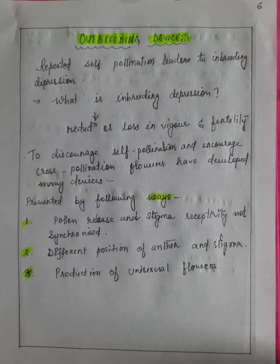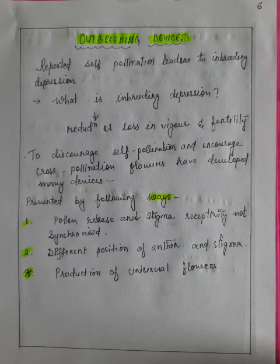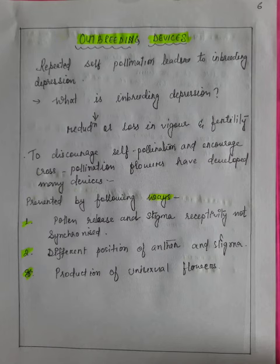This is called outbreeding devices. Due to repeated self-pollination, it leads to inbreeding depression. Inbreeding depression is the reduction or loss in vigor or fertility. To discourage inbreeding depression, to discourage self-pollination, and to encourage cross-pollination, flowers have developed many devices.